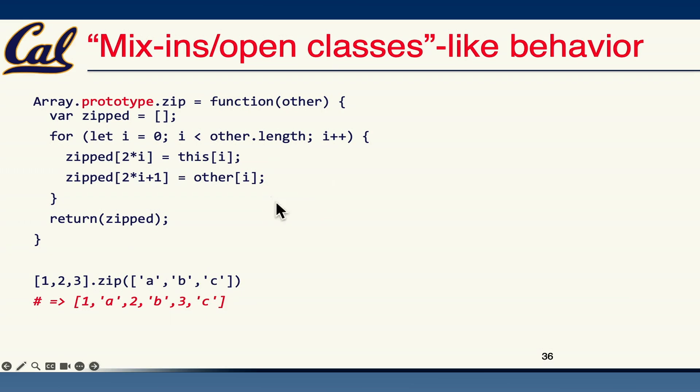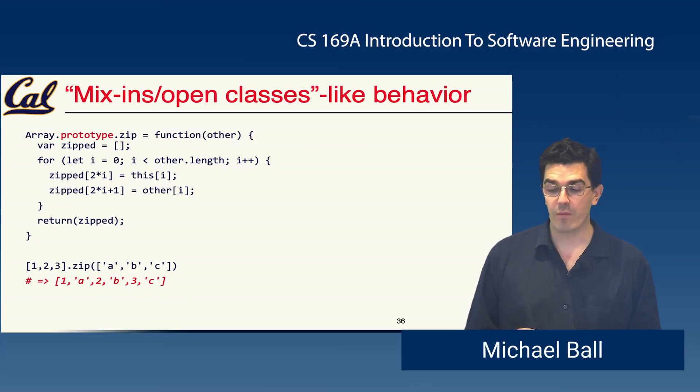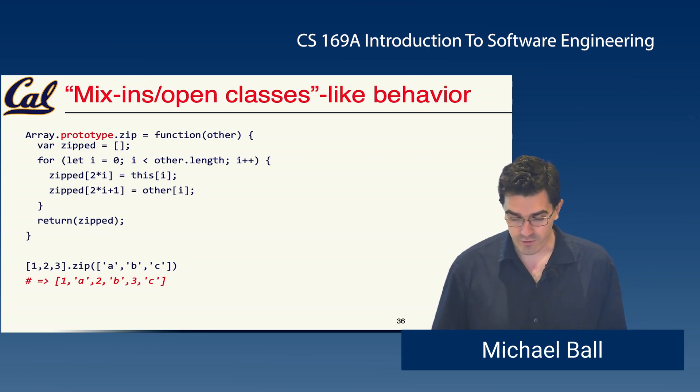There is no default zip method on an array in JavaScript, but you can define your own. This one just squishes two arrays together, but you can now call array.zip on any array if you were to do something like this. Depending on your application, you may be using a library that expands the functionality automatically, but it's dynamic just like Ruby. So if we modify the array object, then every single array gets the benefit of new functions.